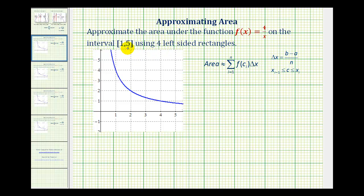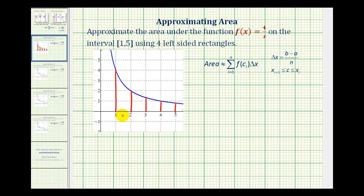Let's start by marking off the interval from one to five. Since we're going to use four rectangles of equal width, we'll divide this into four equal intervals — dividing it in half and then in half again. Notice how the width of each interval is one unit.